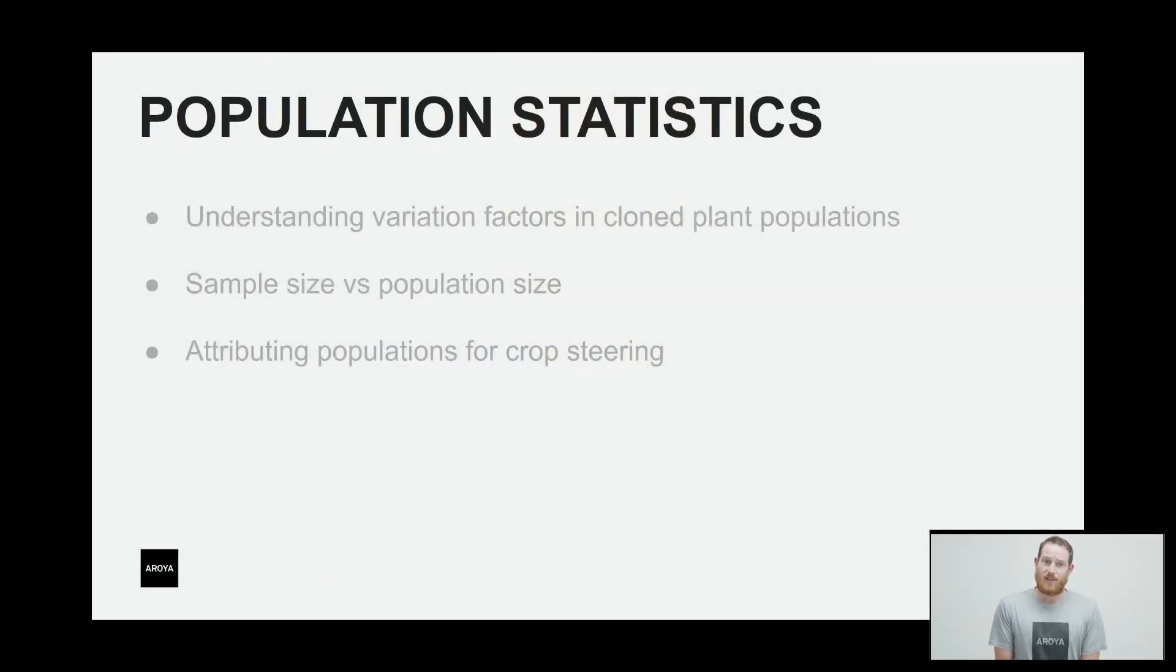So let's talk about population statistics. When we think about variation factors in cloned plant populations, we can easily attribute these with what's called a normalized distribution. In order to build a normalized distribution, we need to get an understanding of sample sizes and how they relate to the population size. We'll finalize the slideshow by talking about how we can apply this statistical analysis to crop steering.